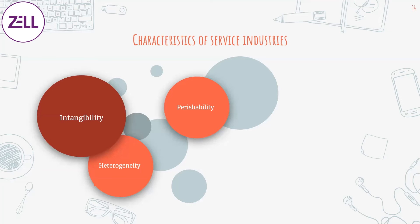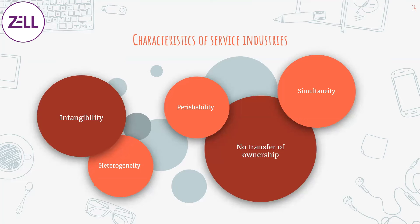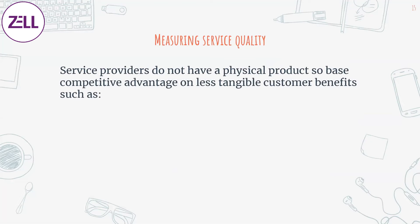There is no transfer of ownership — you can receive a service and that's it, nothing to own. And finally, simultaneity — a service happens at the same time as it is received; someone hasn't prepared it in advance and given it to you. When you talk about measuring service quality, the problem is that there is no physical product — you can't track it, you can't do things with production or end-use measurements.